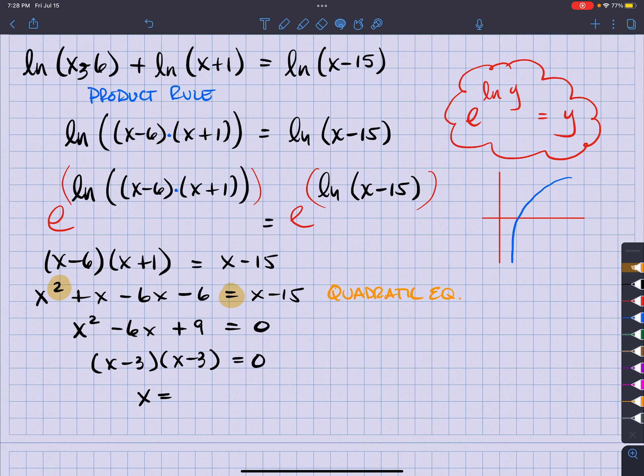And look at what happens. If I put the 3 in here, now I'm going to take the natural log of a negative 3. Or over here, I'm going to take the natural log of negative 9. So that is no good.